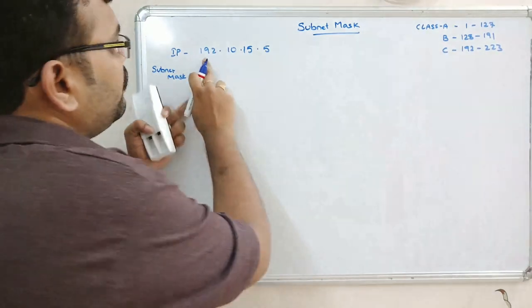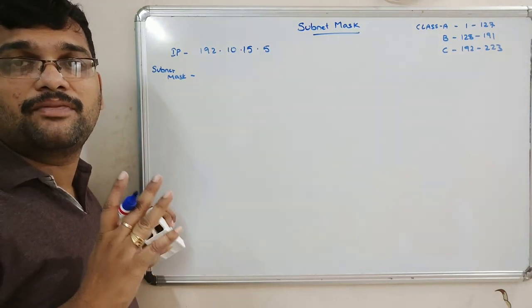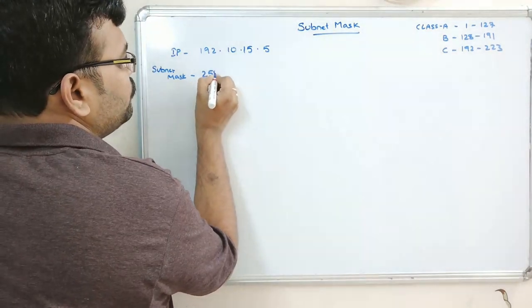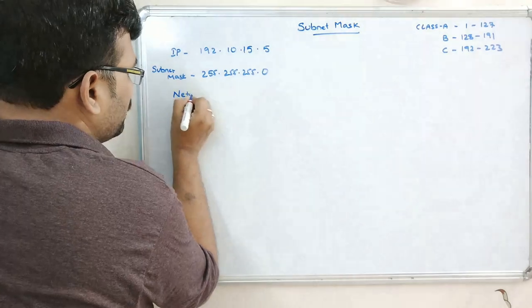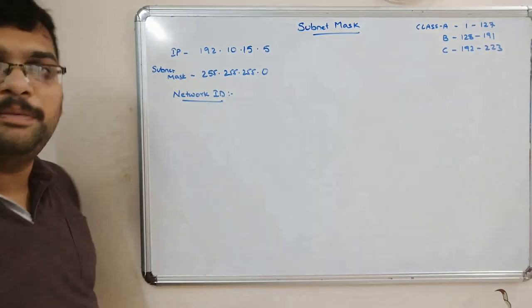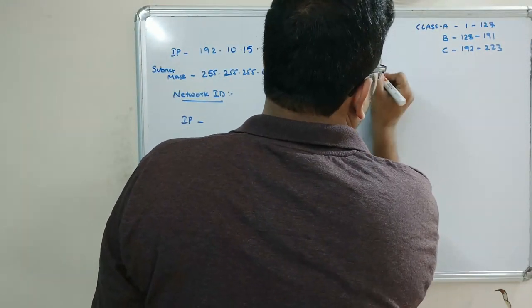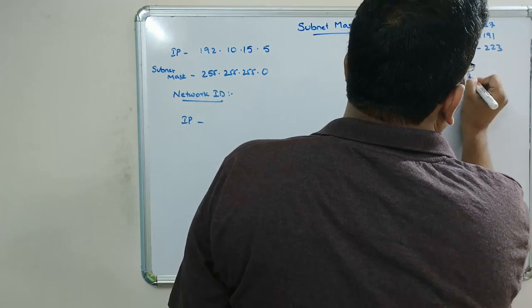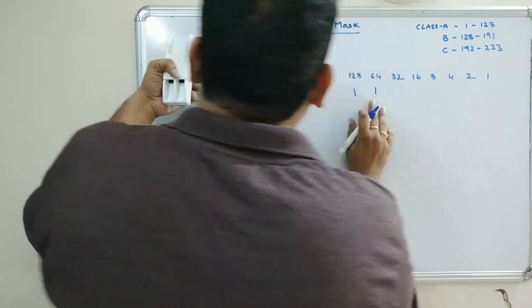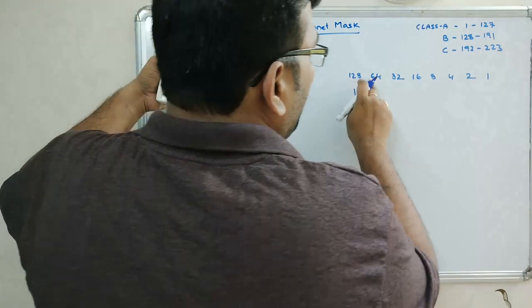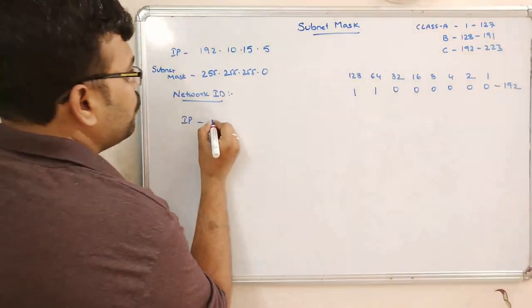Since 192 comes under class C, the subnet mask is 255.255.255.0. Now we convert the IP address to binary. 192 in binary is 11000000, 10 in binary is 00001010, 15 in binary is 00001111, and 5 in binary is 00000101.